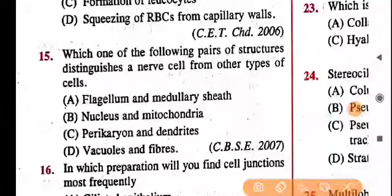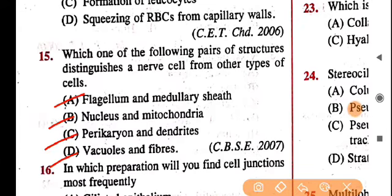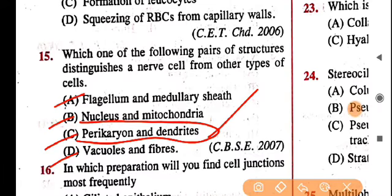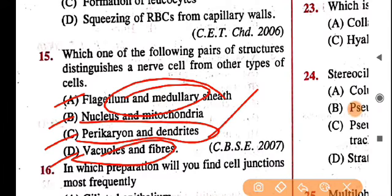Question 15: which one of the following pairs of structures distinguishes a nerve cell from other types of cells? The options include flagella, medullary sheath, nucleus, mitochondria, perikaryon, dendrites, vacuoles, and fibers. The answer is perikaryon and dendrites — the rest are common to other cells. Flagella are not part of nerve cells. So option C — perikaryon and dendrites — are the characteristics of nerve cells.